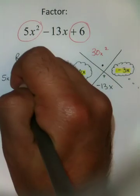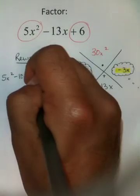Now what goes in the middle? Well, there it is, your middle pieces: negative 10x and negative 3x.